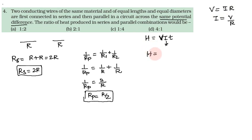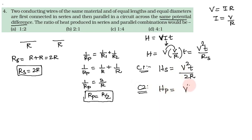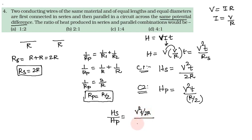Using the heat formula H = V²T/R, since voltage V is constant, heat produced in series is V²T divided by Rs (which is 2R), and heat produced in parallel is V²T divided by Rp (which is R/2), giving 2V²T/R.